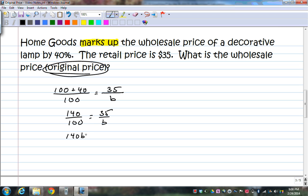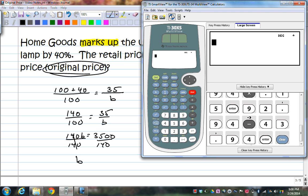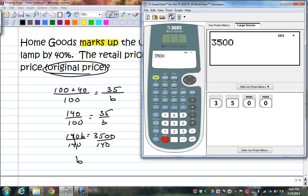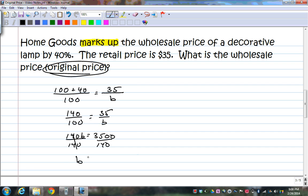So I have 140 over 100 is equal to 35 over B. Cross multiply, I get 140B is equal to 3,500. Divide both sides by 140. And B, let's do that real quick. I have 3,500 divided by 140 is $25. So, it is $25 is the price before they marked it up. And again, the reason that I'm using 140 here, because 35 represents 140% of the original price. It's been marked up. So, we added it to 100.